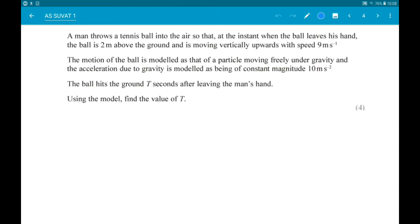Alright, so what do we know? It starts 2 meters above the ground, so S is going to be minus 2. The reason it's negative is because it's ending lower than where it started. We know that U is 9. We don't know or care about V. We know that A is acting downwards, so it's minus 10, and T is T.